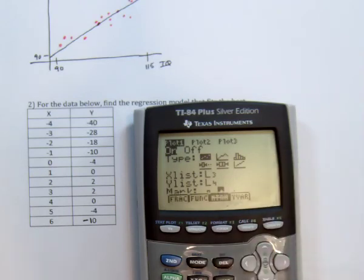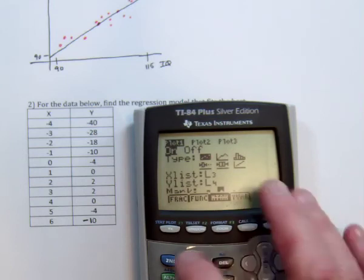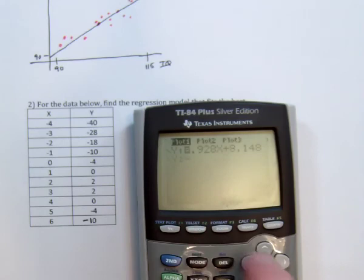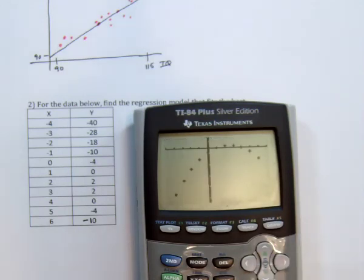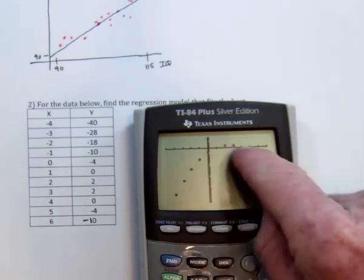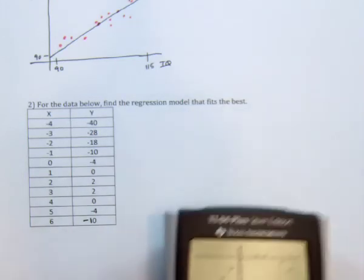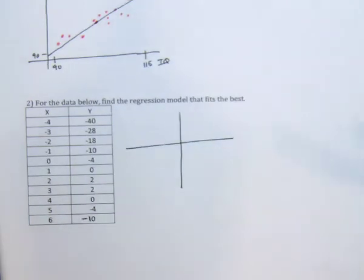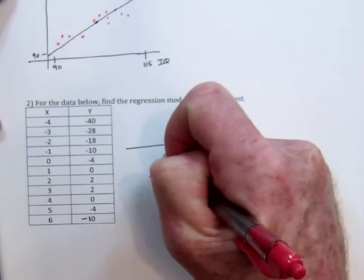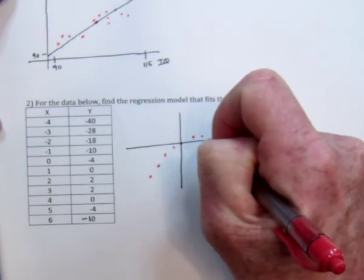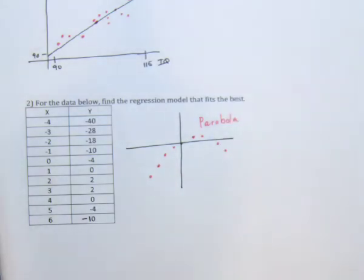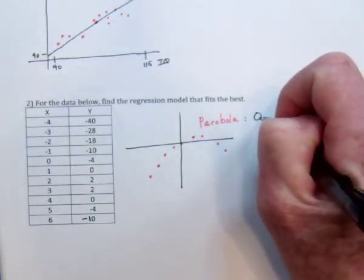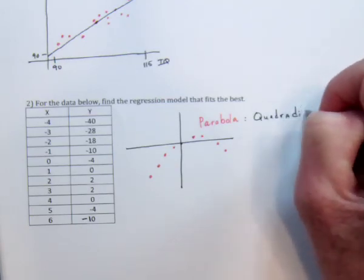So that looks like a parabola. A parabola is an arc shape. So I could just put a quick sketch of it. The directions didn't say I have to, but I always like to do a little bit of artwork when I can. So I think it looks like a parabola. Or in other words, this is going to be quadratic regression.